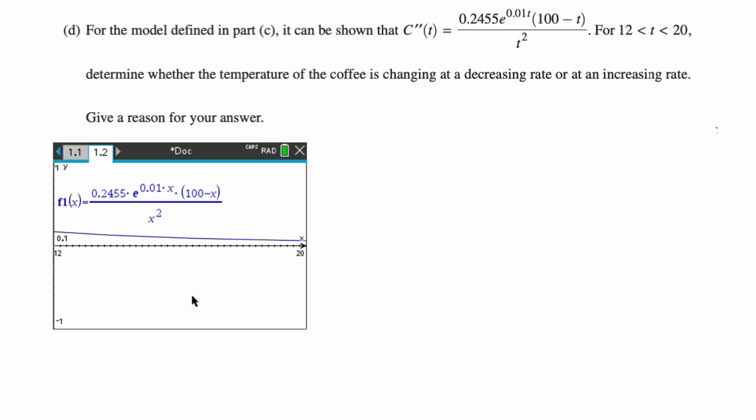And we can see that C''(t) is greater than zero. So we're going to say, between 12 and 20 C''(t) is greater than zero. That means that the temperature is changing at an increasing rate, right? The rate of change of the temperature is increasing. So the temperature of the coffee is changing at an increasing rate.